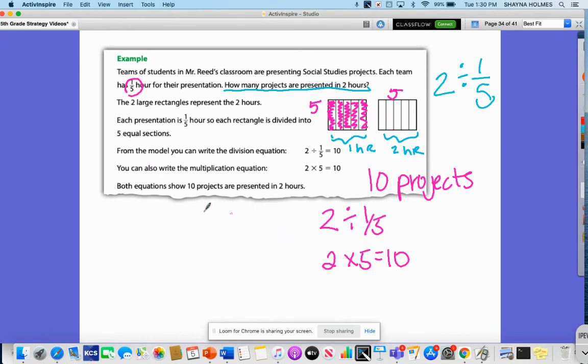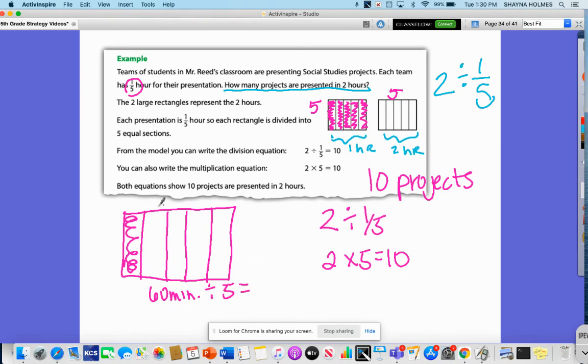Also something to think about - if this is one hour, that would be 60 minutes. How many minutes would it take to present each project? Here are my fifths: 1, 2, 3, 4, 5, each representing a project. If I took 60 minutes and divided it by 5, that would tell me how many minutes each project would take - so roughly 12 minutes per project.